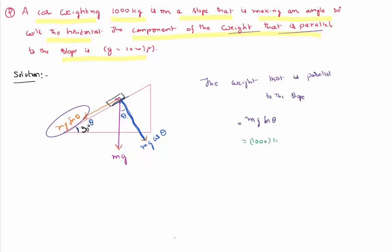g is taken as 10, and theta is 30 degrees. We know that sin 30 is equal to one half. So the calculation is 1000 × 10 × 1/2, which equals 5000. Therefore the force acting parallel to the inclined plane is 5000 Newtons.